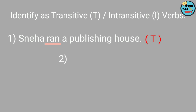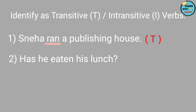Now let's look at the second sentence: 'Has he eaten his lunch?' Does it have a transitive verb or an intransitive verb? In this sentence, 'eaten' is a transitive verb. How did we recognize it? We identified the verb first, which was 'eaten'. Then we identified whether 'has he eaten' in itself makes complete sense or not — does it need any object? We conclude that it does, because if we question it — what did he eat? — we get 'his lunch'. So 'eaten' becomes a transitive verb.